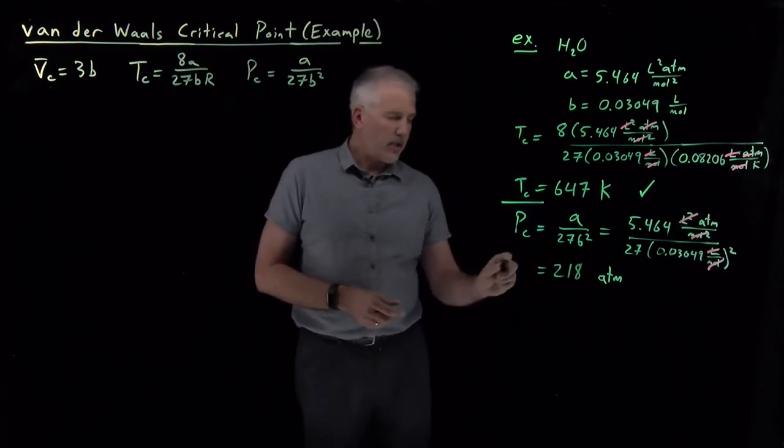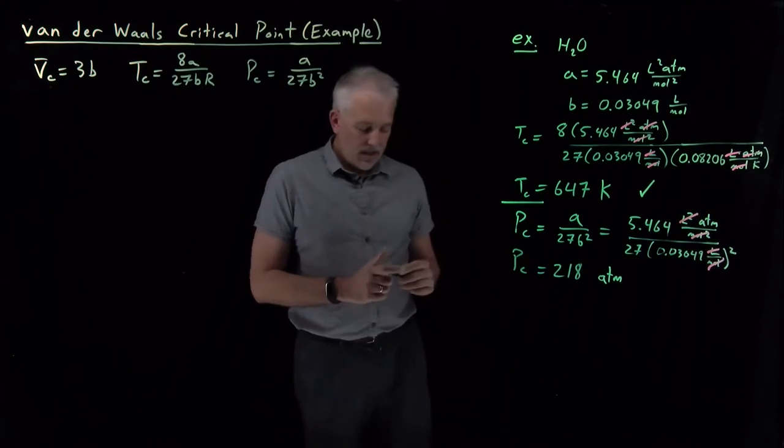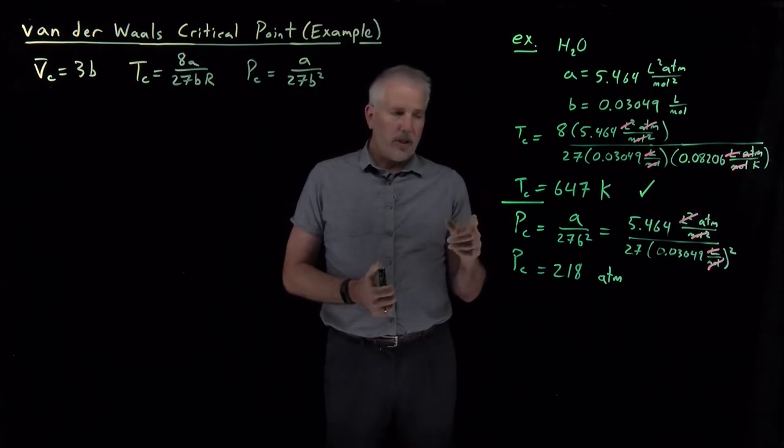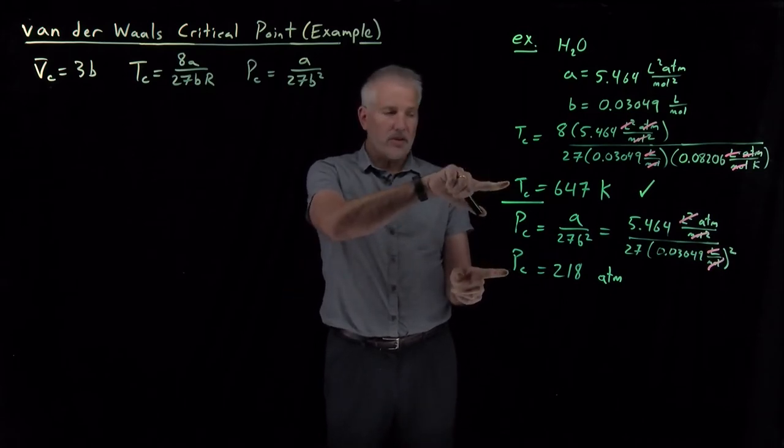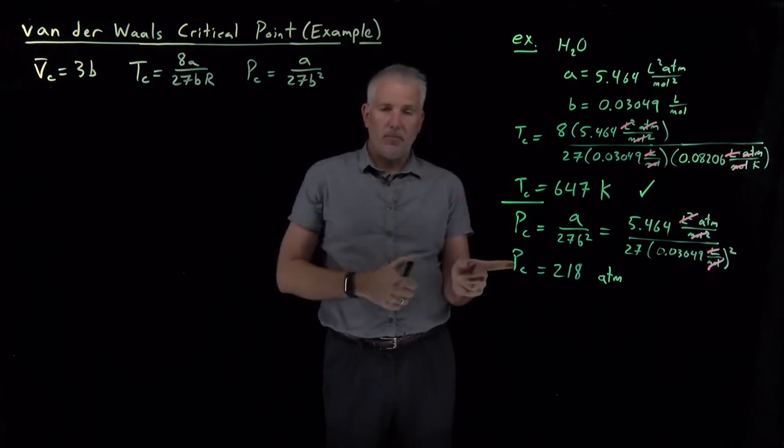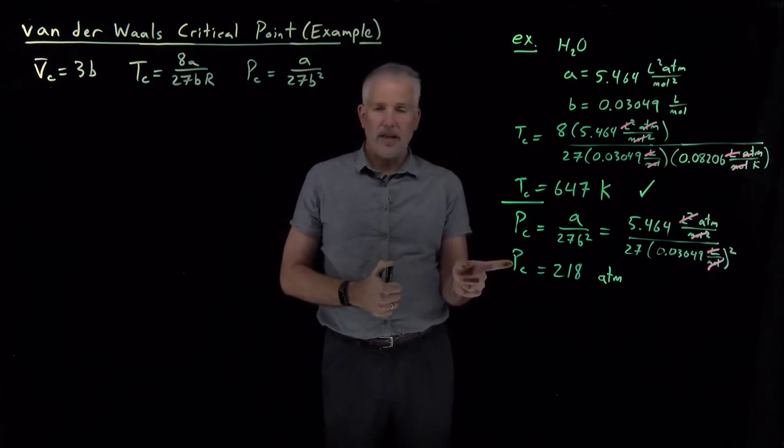Again, stopping to think about what that means. Water boils at one atmosphere, 373 Kelvin. If I increase the pressure, the boiling point increases. Clausius-Clapeyron tells us roughly how that works. By the time the boiling point gets up to 647 Kelvin, the pressure is up to 218 atmospheres.